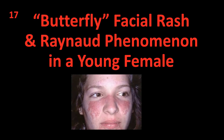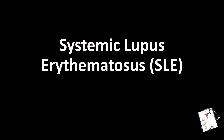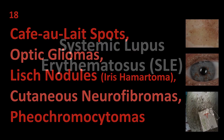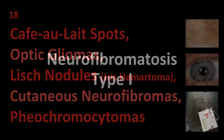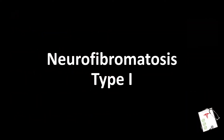Number 17: Butterfly facial rash and Raynaud phenomenon in a young female. Answer: Systemic lupus erythematosus. Number 18: Café-au-lait spots, optic gliomas, Lisch nodules, cutaneous neurofibromas, pheochromocytomas. Answer: Neurofibromatosis type 1.